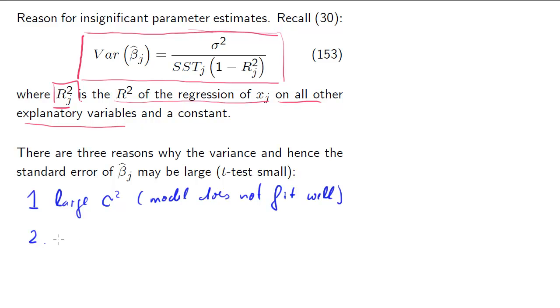Second, we may have very small SSTj. What's that? The sum of square total of j. That means that we have very little variation in the j-th variable.